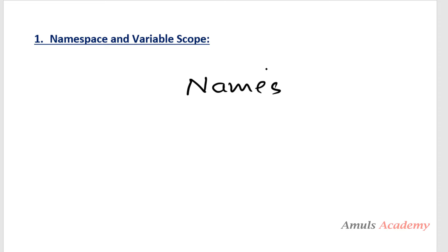Now that we know what a name is, we need to know what a namespace is. A namespace is basically a system that controls all the names we use in our program. It ensures that whatever names we use are unique and won't lead to any conflict. In simple words, namespace is a system that controls all names in our program and allows us to reuse a name.